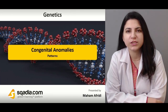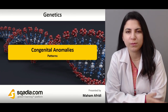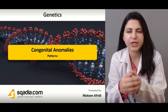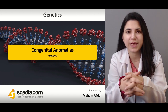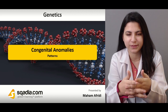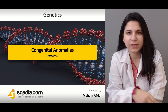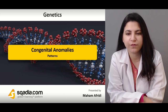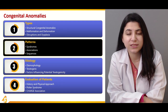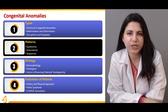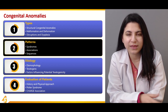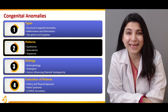After knowing the types of congenital anomalies, we need to differentiate and understand the pattern in which a congenital anomaly actually appears. In this section, we will study three different patterns of congenital anomalies: syndromes, associations, and sequences. We will see how we can differentiate a congenital anomaly by looking at the pattern in which it appears.